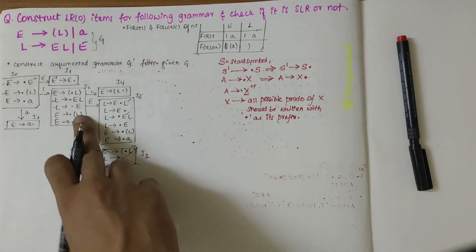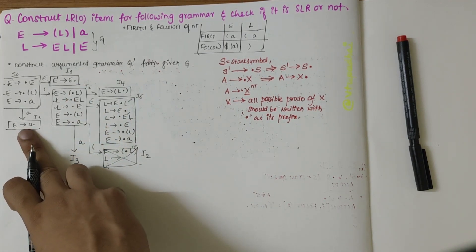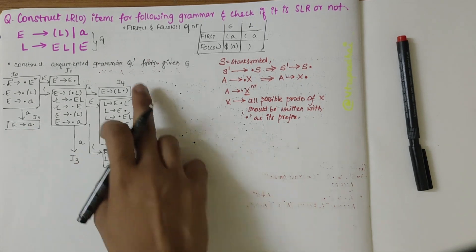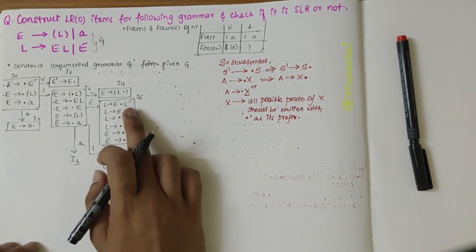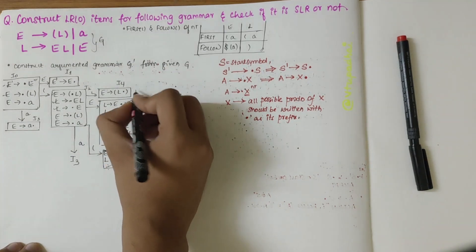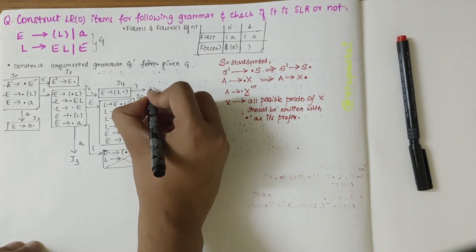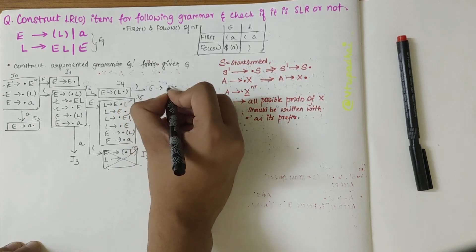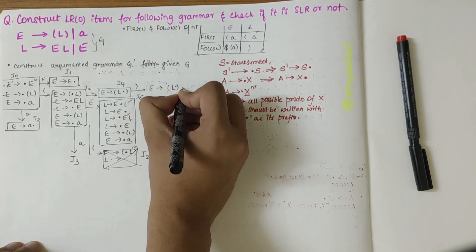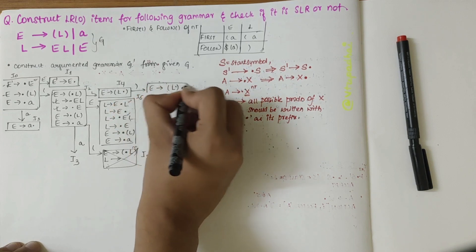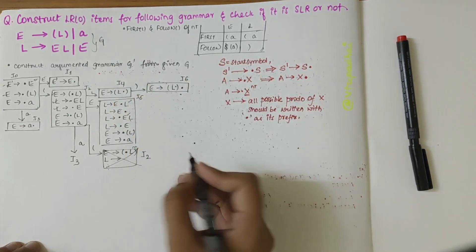Looking at I3, there's nothing to shift further. I4 also has nothing to shift further. In I4 I have close bracket, so I can shift it. I get E derives parenthesized L followed by a dot. This would be my I6 production.